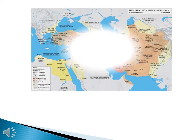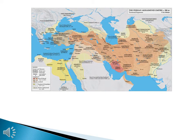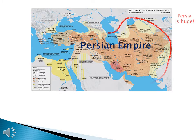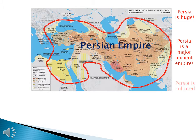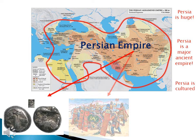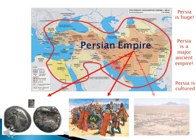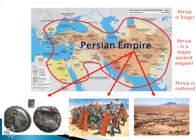Welcome to World History 1, lecture 5.6 on the Persian Wars. Let's go back to ancient civilizations. Here's the Persian Empire. What did we learn? One, Persia is huge. Two, Persia is a major ancient empire. And three, Persia is cultured. These aren't barbarians — these are people who run a sophisticated civilization.